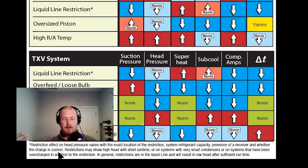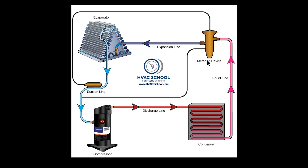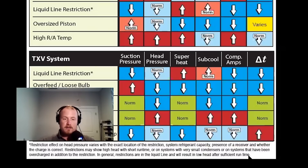In a lot of cases you'll have a restriction coupled with an overcharge. Say you have a restricted liquid line dryer — the technician shows up, sees that head pressure and suction pressure are both low, and concludes he's low on charge, so he starts adding refrigerant. Eventually head pressure will go up because as you fill the condenser more and more, the volume decreases to the point of hydrostatic pressure buildup — you get hydrolocked because you have so much liquid inside the condenser, which can cause some really high pressures. That's a real problem.